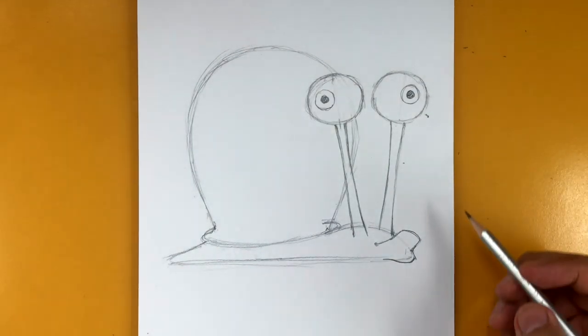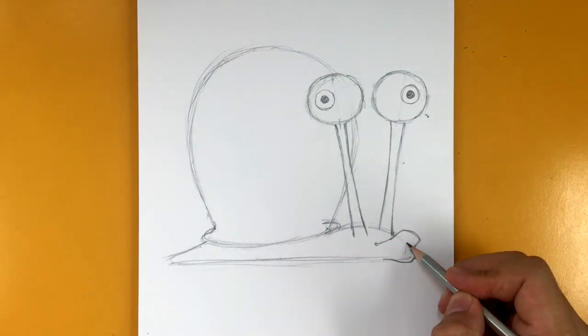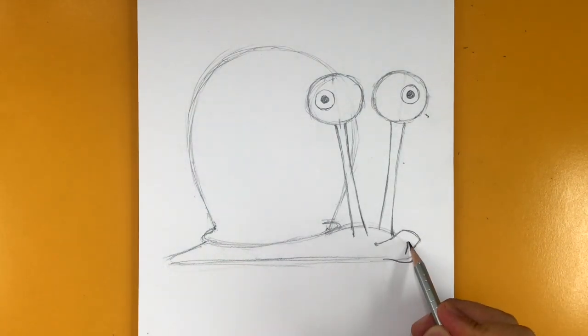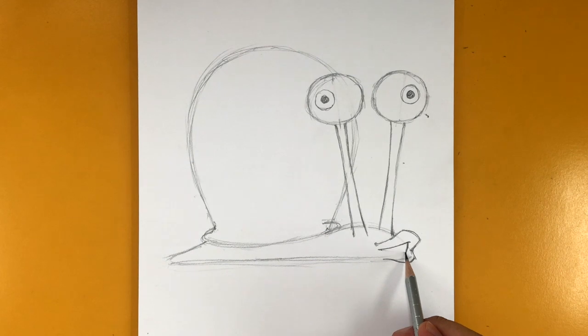Good. All right. There you go. So there's Gary's eyes. I'm going to draw a line going down like this. And then from here, I'm going to bring it to this point. Like that. And from here, like this.